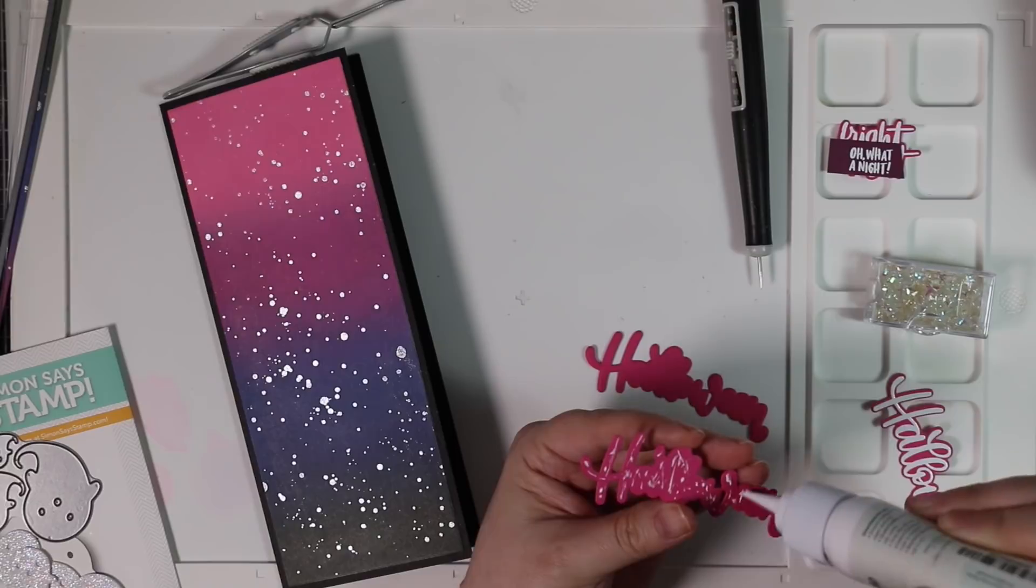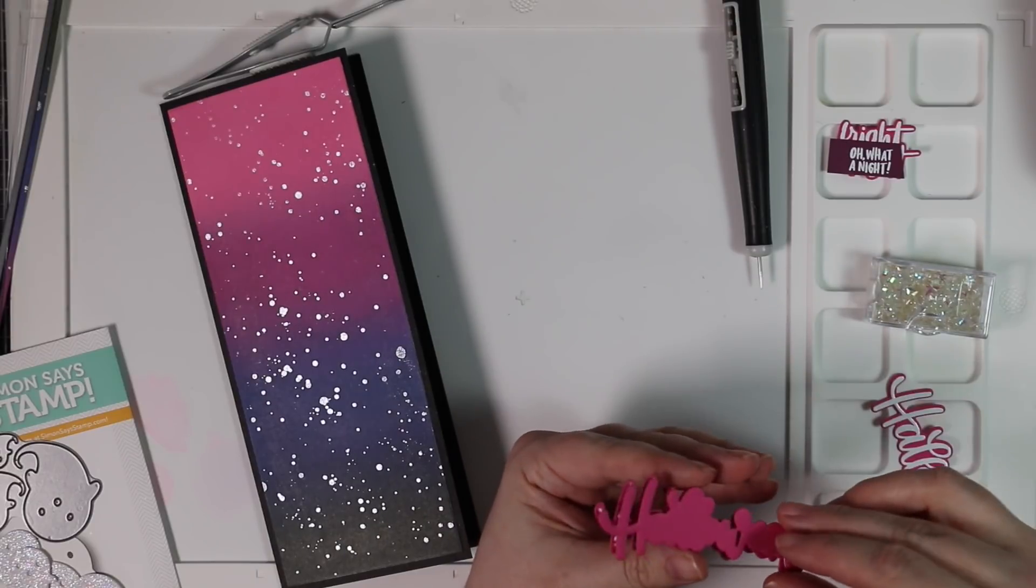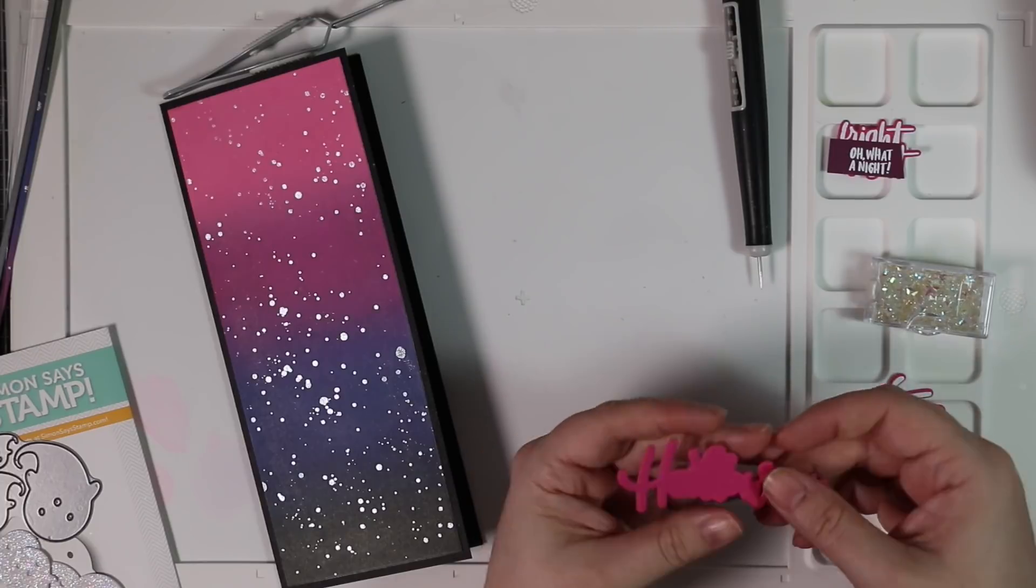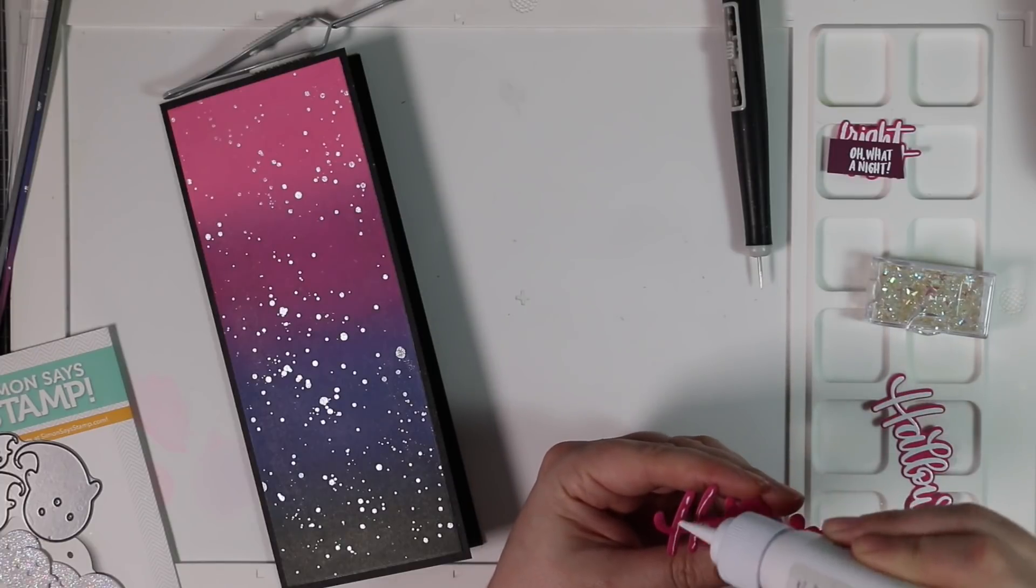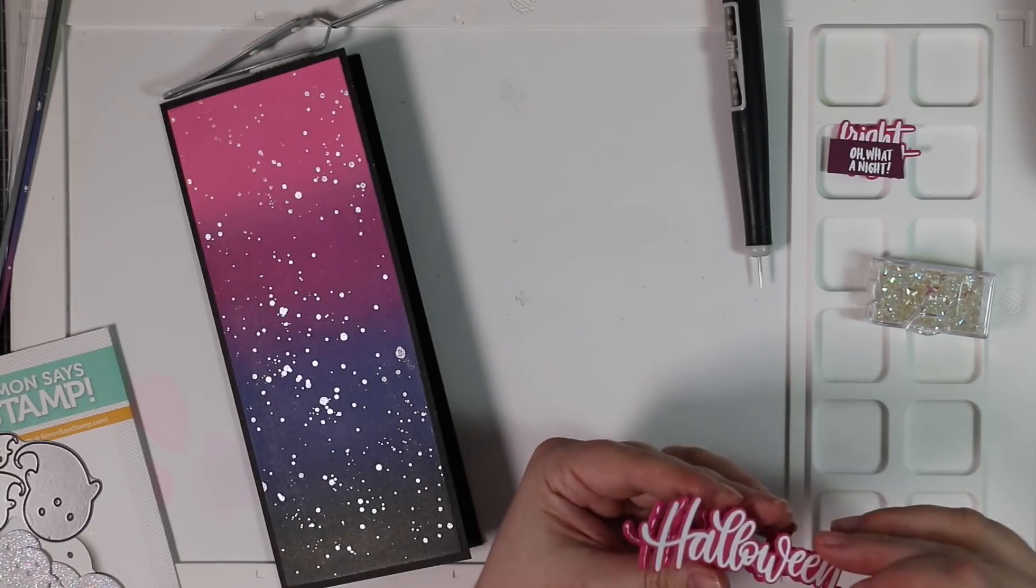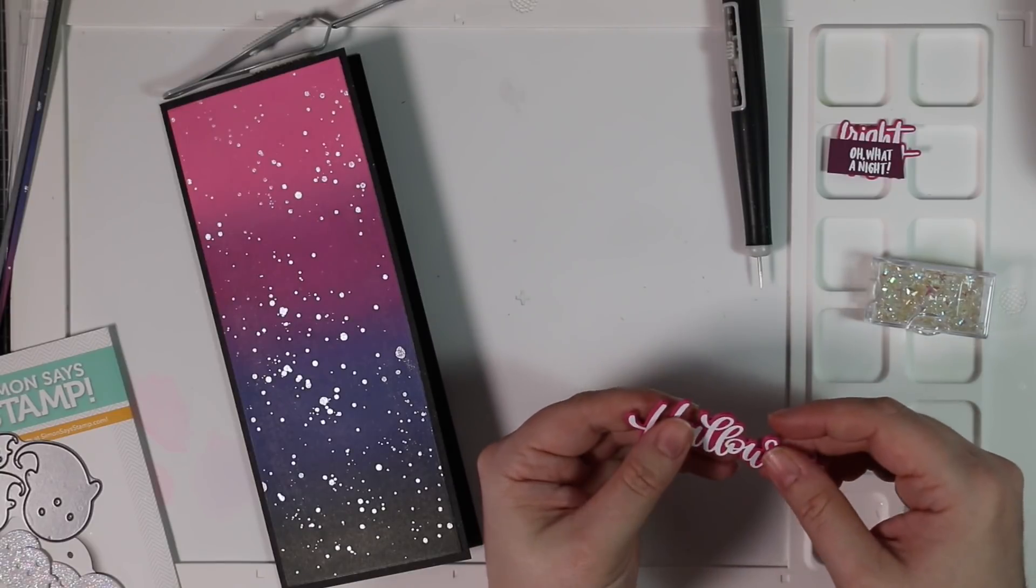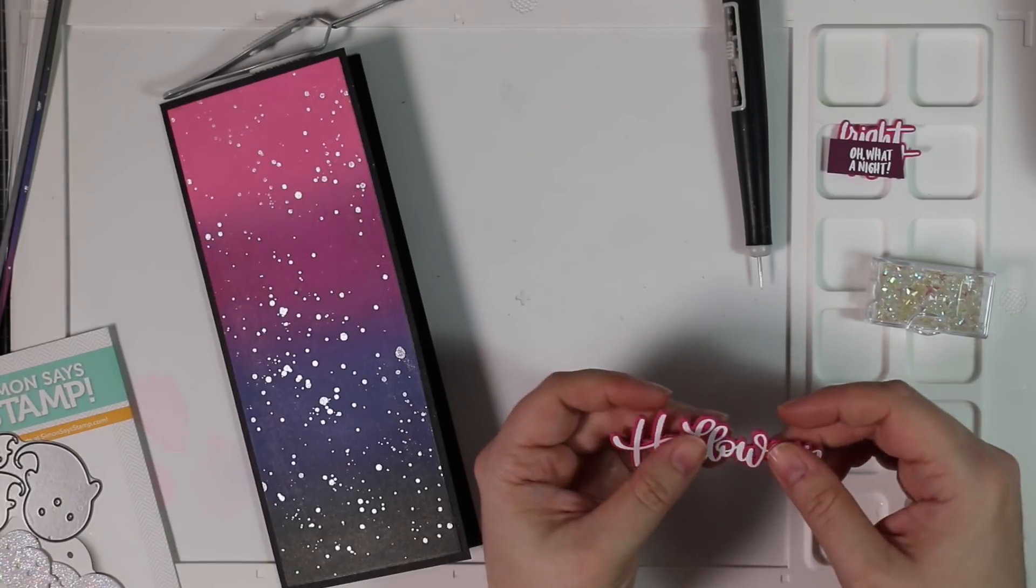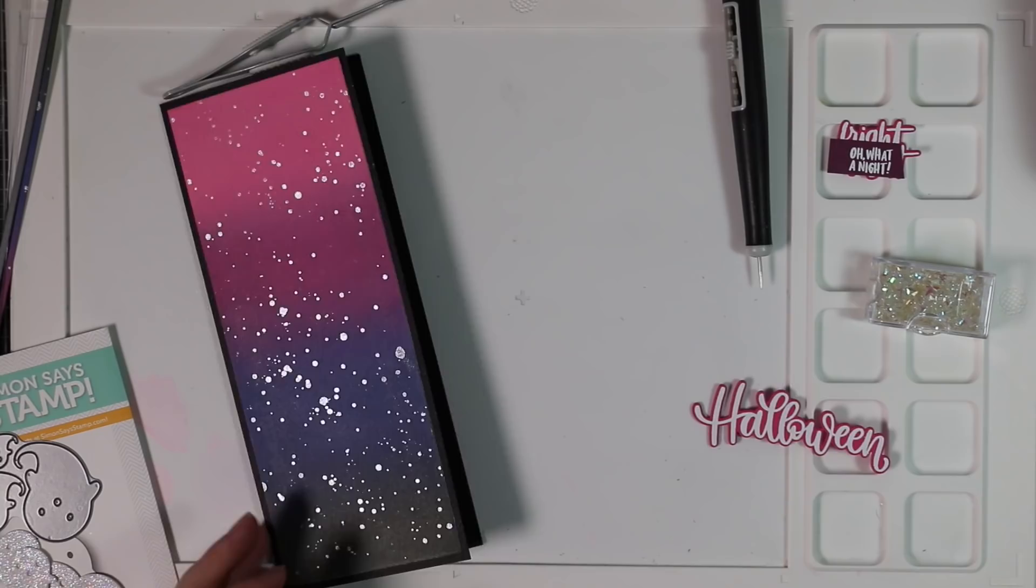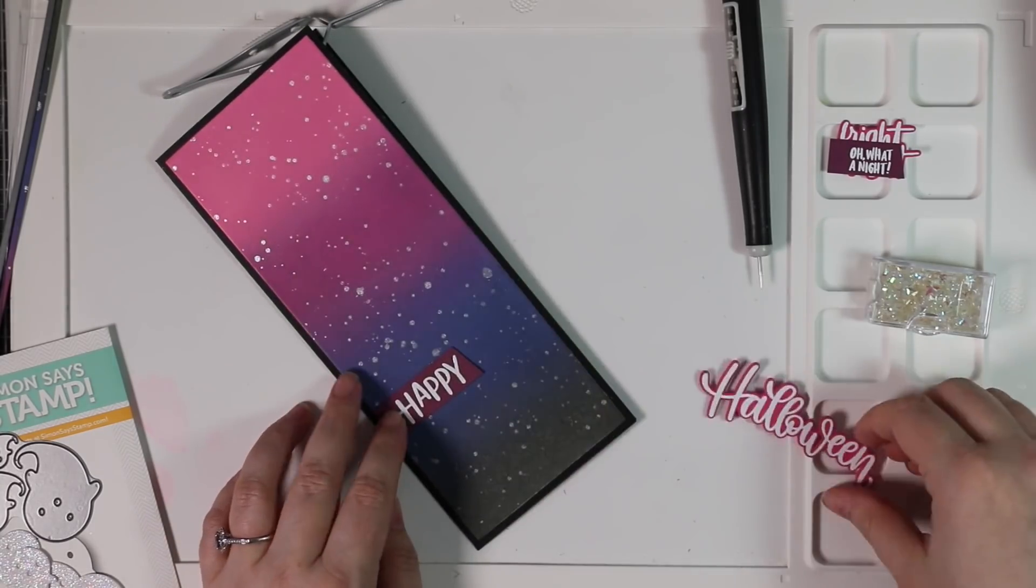So for that Halloween sentiment, I die cut a couple more without stamping them or anything. I die cut a couple more from that same pink cardstock, and then I'm going to adhere the top layer to that. So that gives it that dimension. So I don't have to sit and fiddle with little bits of foam tape and that sort of thing. That just gives it that dimension that I want.